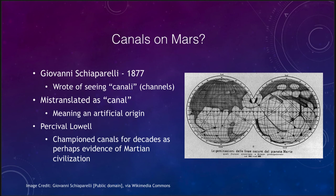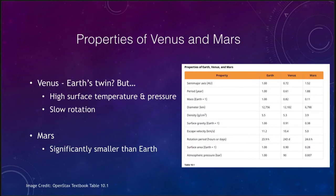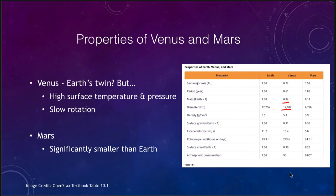Let's look at the general properties of Venus and Mars. Venus is closest in size to the Earth — in terms of mass, it is 82% of the mass of the Earth, very close. It is only about 600 kilometers smaller in diameter. Its density is about the same, and its surface gravity is about the same. The things that are different are the atmospheric pressure, which is 90 times Earth's atmospheric pressure, and the surface temperature, which is also much, much hotter. So in many ways it is like the Earth, but it has that very high surface temperature and very high pressure.